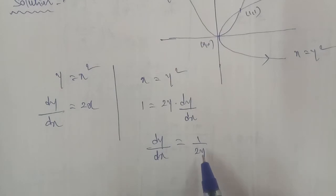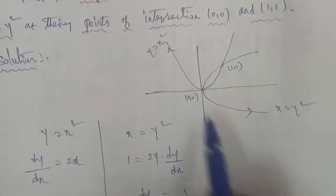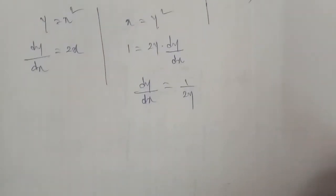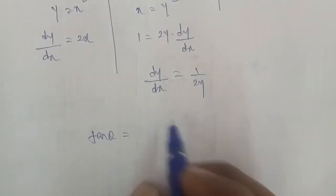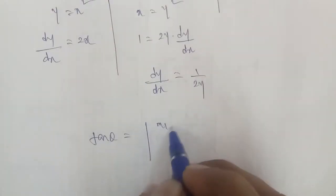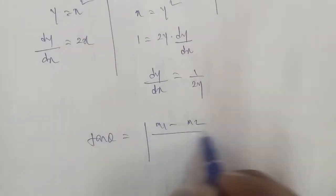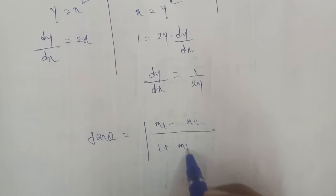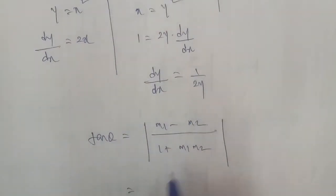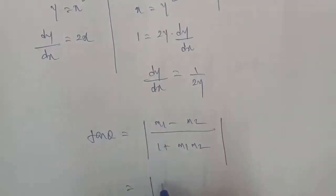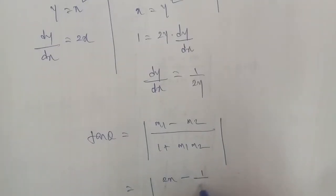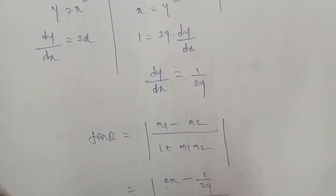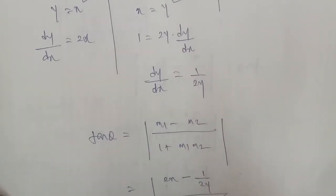The formula for angle is tan theta is equal to m1 minus m2 divided by 1 plus m1 into m2. Here m1 is 2x and m2 is 1 by 2y.